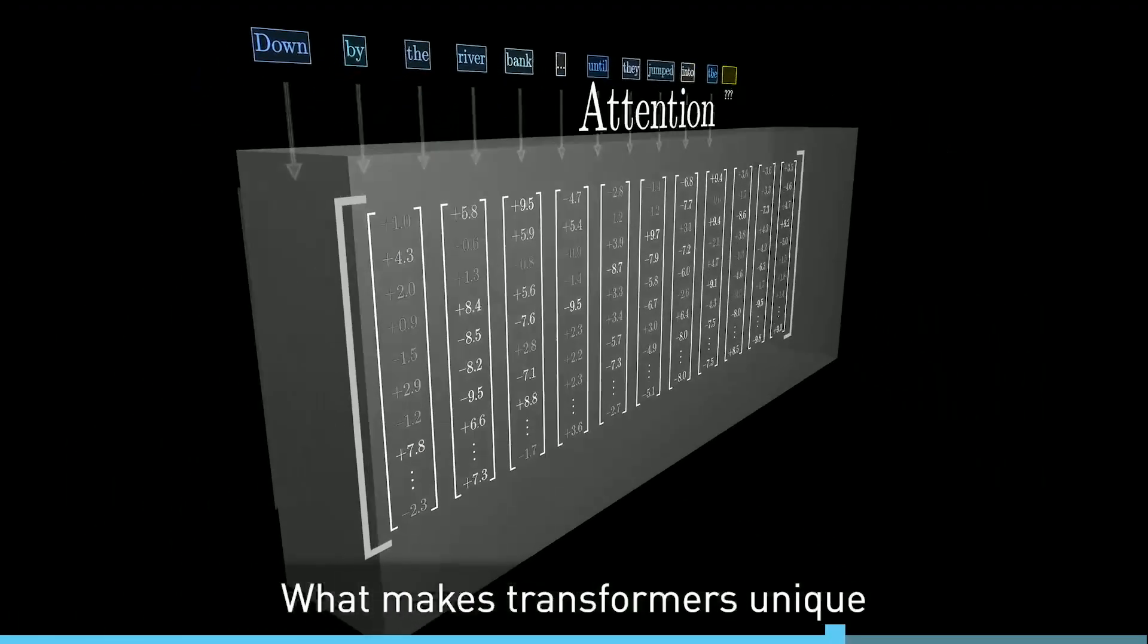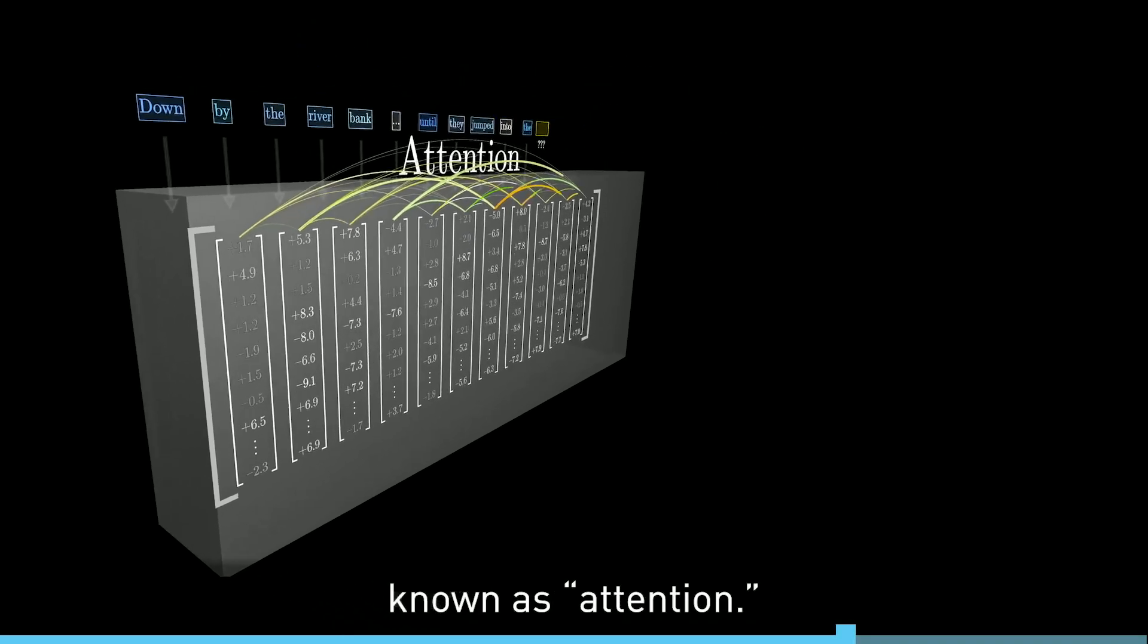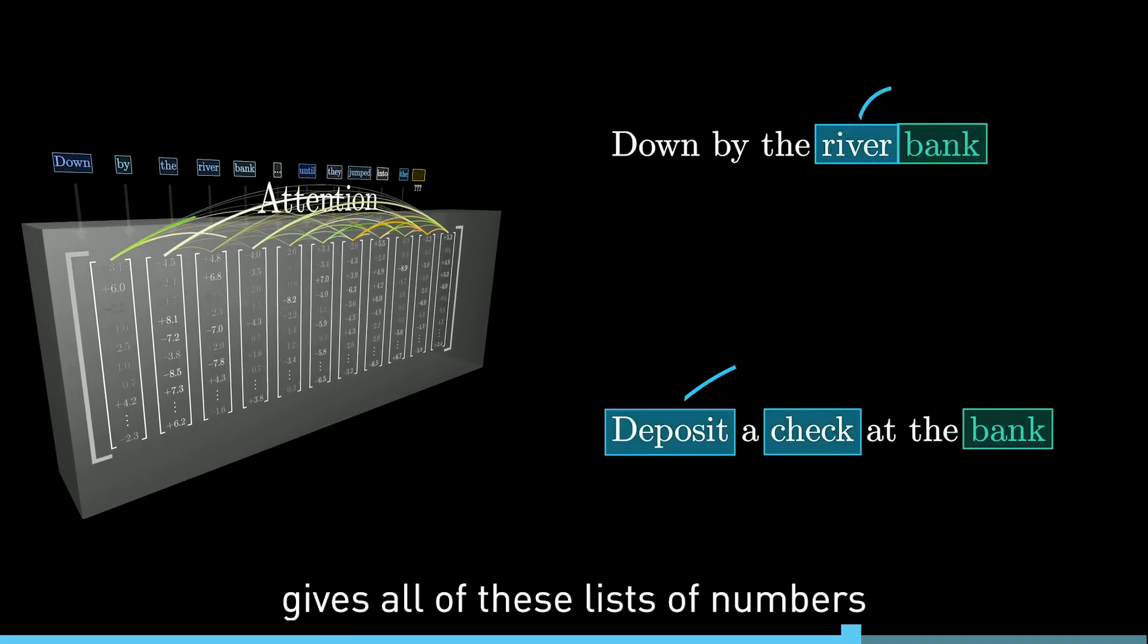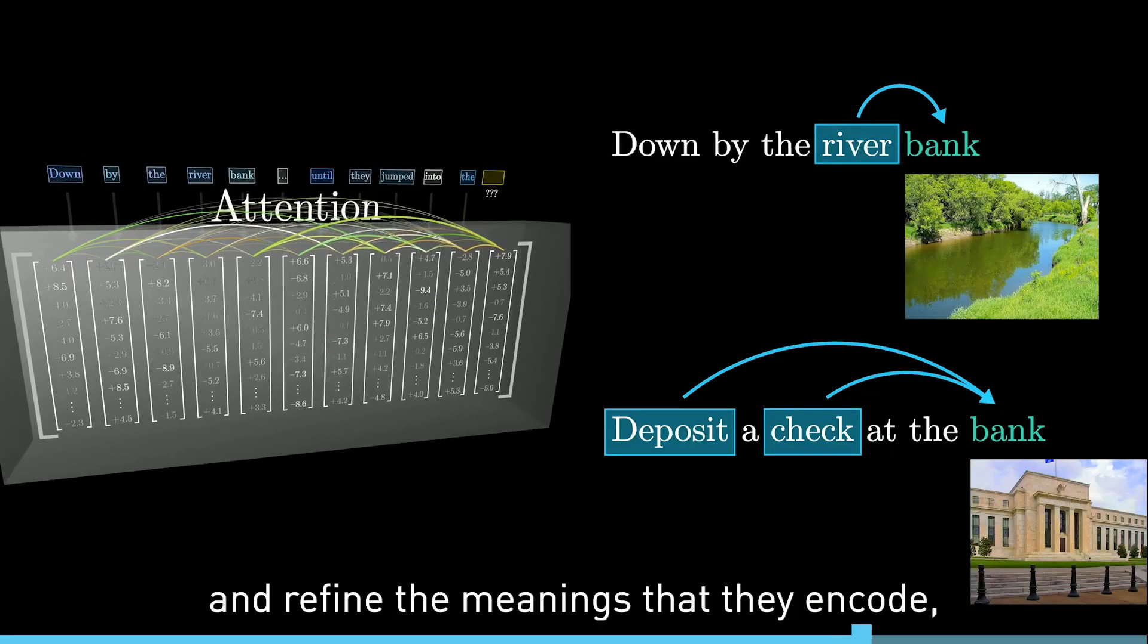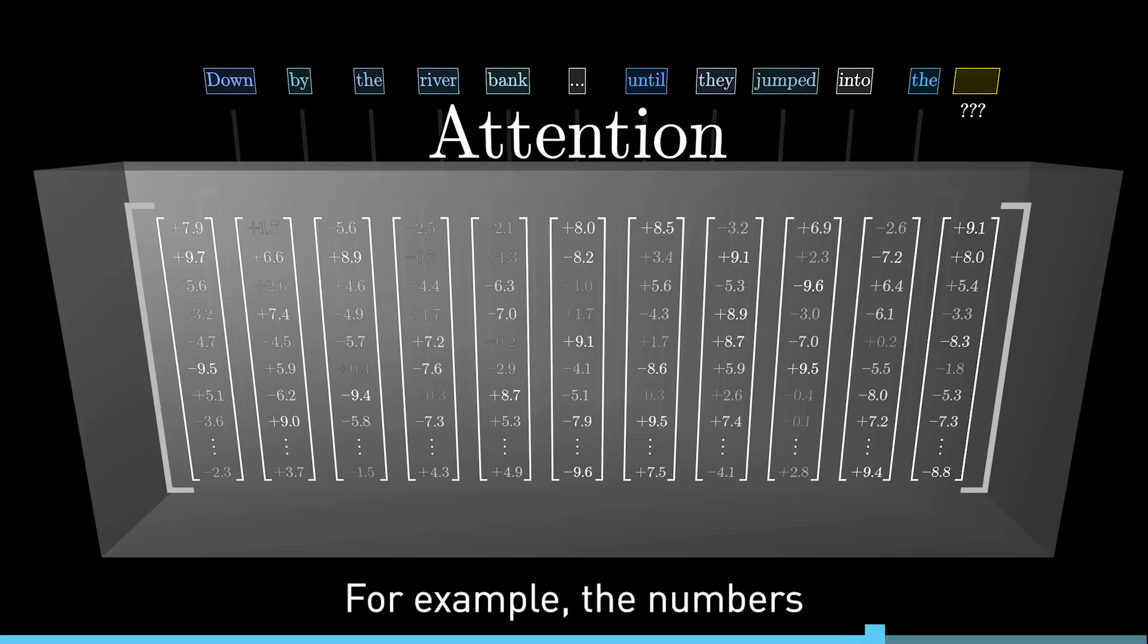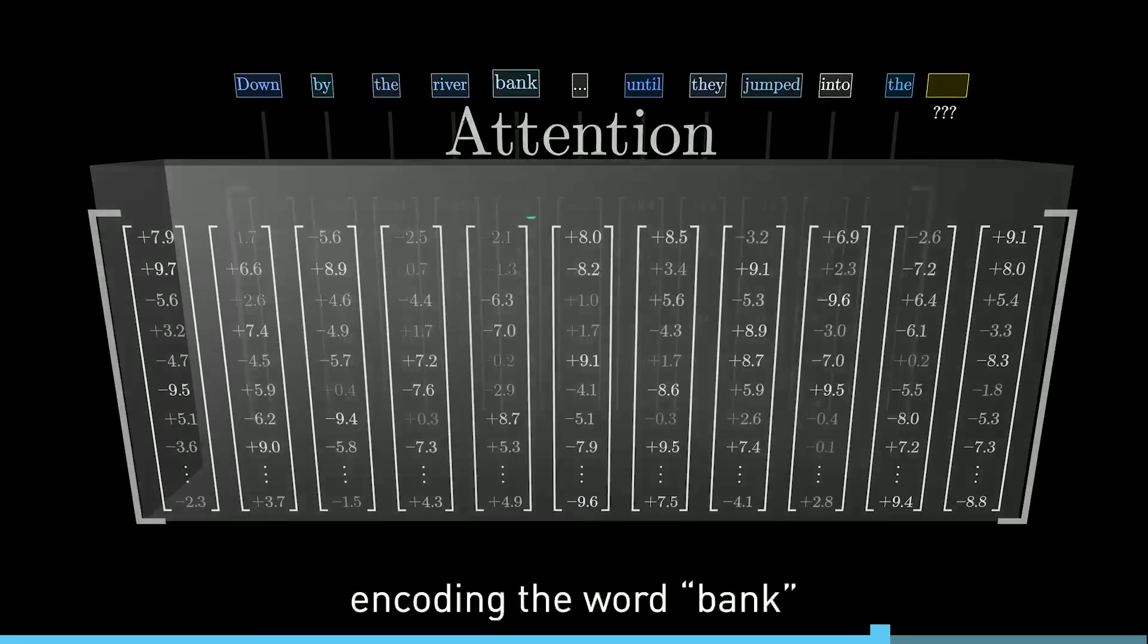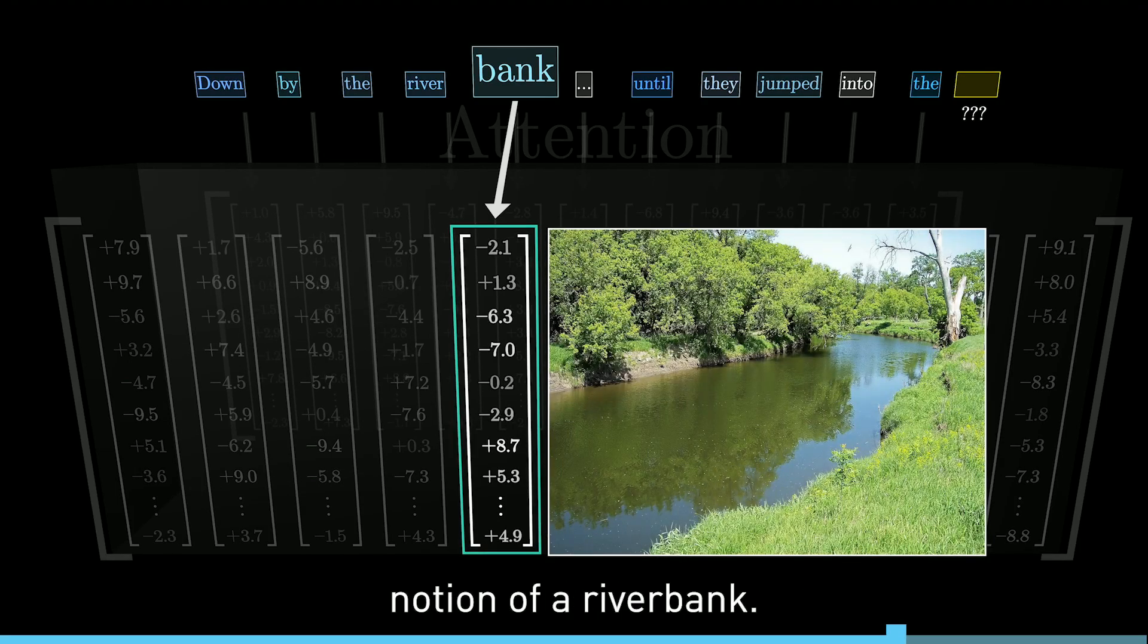What makes Transformers unique is their reliance on a special operation known as attention. This operation gives all of these lists of numbers a chance to talk to one another and refine the meanings that they encode based on the context around, all done in parallel. For example, the numbers encoding the word bank might be changed based on the context surrounding it to somehow encode the more specific notion of a riverbank.